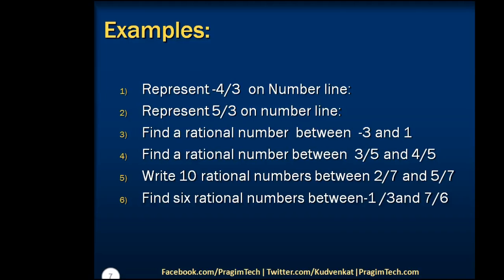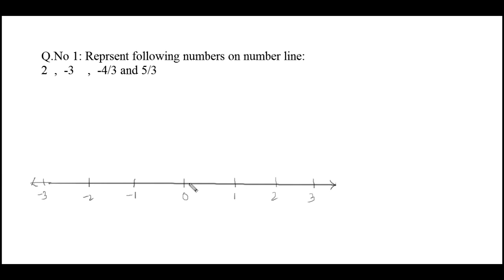We have discussed various ways of representing numbers. Now let's see how these numbers can be represented on a number line. The following examples will be discussed: representation of numbers on a number line, and finding a rational number between given rational numbers. The number line is a horizontal line where 0 is at the middle, all positive numbers are on the right-hand side, and all negative numbers are on the left-hand side.